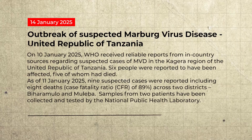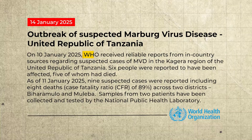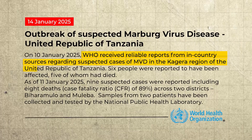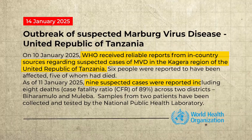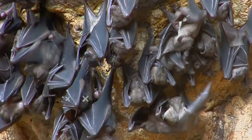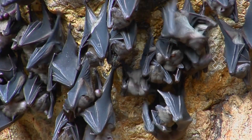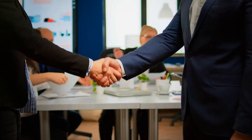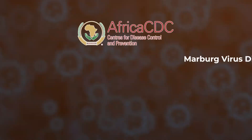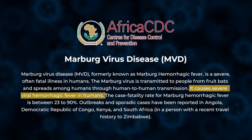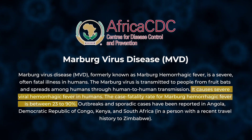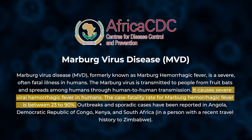On January 14, the WHO announced a virus outbreak in the Kagera region of northwest Tanzania, with nine cases and eight deaths. This virus is spread to humans by fruit bats and can be passed between people through human-to-human contact. It causes severe viral hemorrhagic fever with a death rate ranging from 23% to 90%.